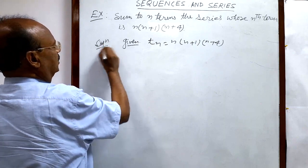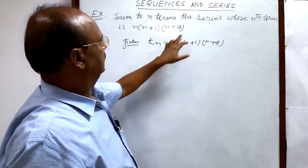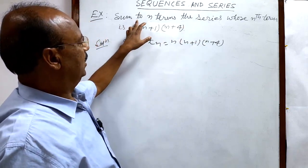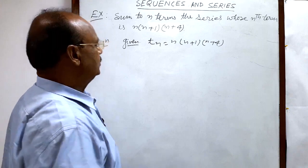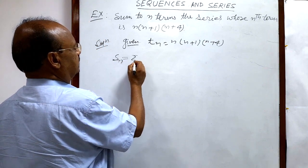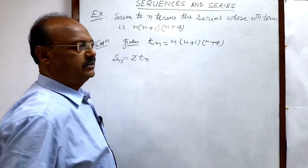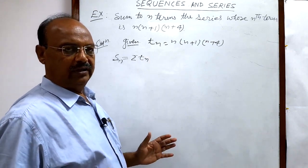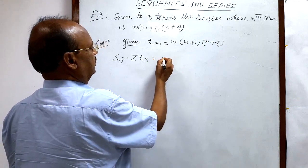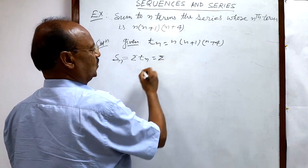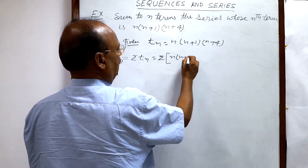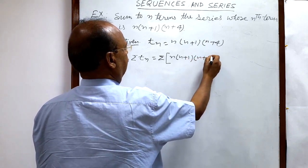This is the nth term of the series and we have to find the sum up to n terms. The sum up to n terms, Sn, can be written as sigma of tn — the sum of all n terms of the series — and this is equal to sigma of n into n plus 1 into n plus 4.